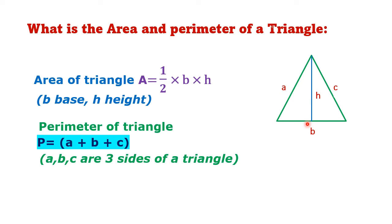Perimeter of triangle P equals A plus B plus C, where A, B, C are the three sides of a triangle.